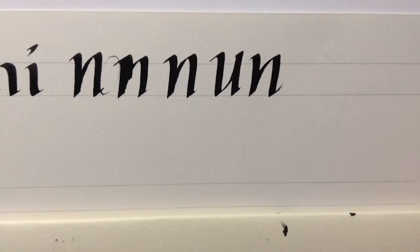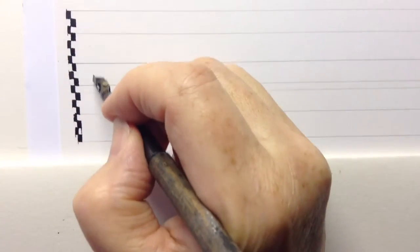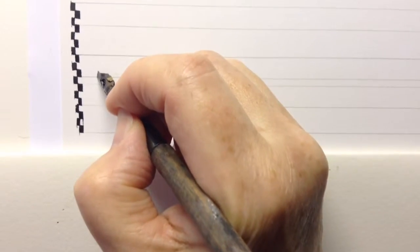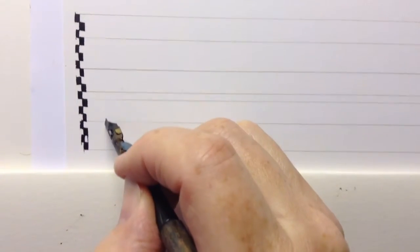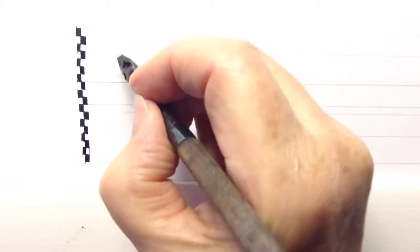Now, spacing between lines. You need to allow for the descenders, the bits that go down on one line, not to clash with the ascenders, the bits that go up on the previous line.